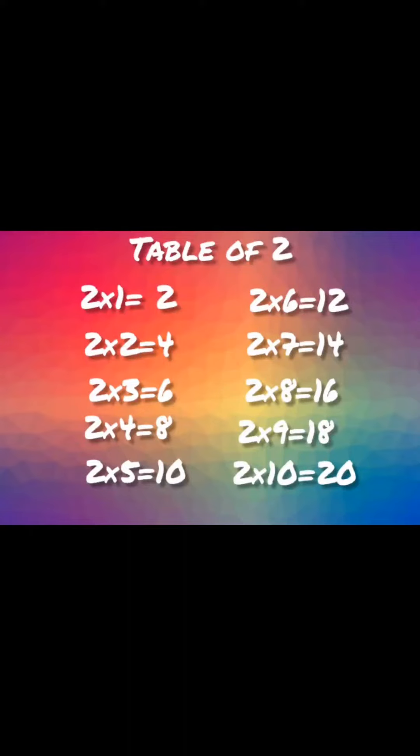Table of two. Two ones are two. Two twos are four. Two threes are six. Two fours are eight. Two fives are ten.